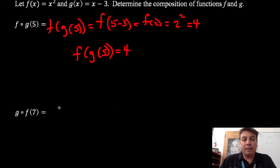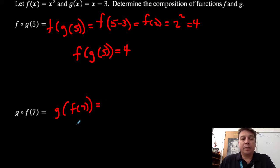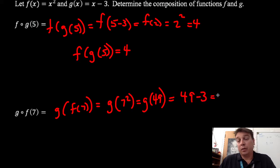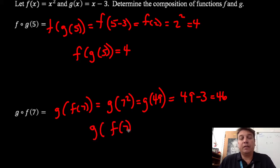Now I have g of f of 7. So I substitute 7 into function f, giving me g of 7 squared, which is g of 49. I substitute 49 into function g: 49 minus 3, which gives me 46. So g of f of 7 equals 46 — all just substituting one value into a function, getting the output, and substituting that into the other function.